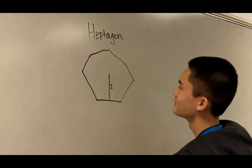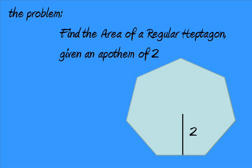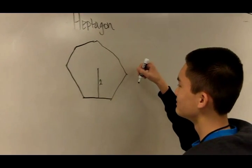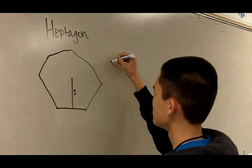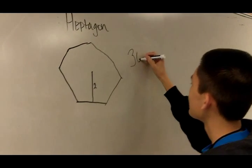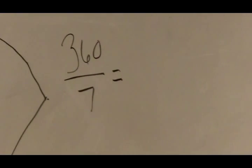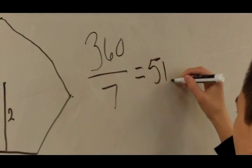My name is Bobby and I'm going to show you how to find the area of a heptagon. First you have to find the central angle which you do 360 divided by 7 and you get 51.43.